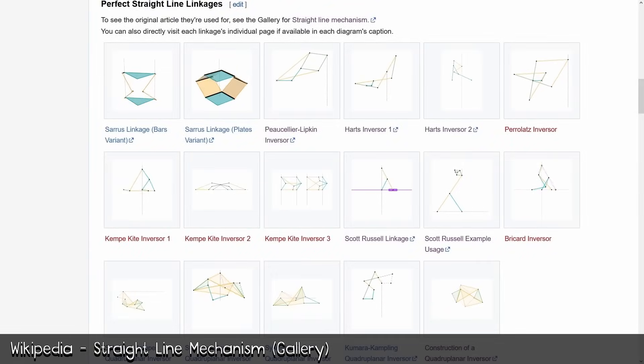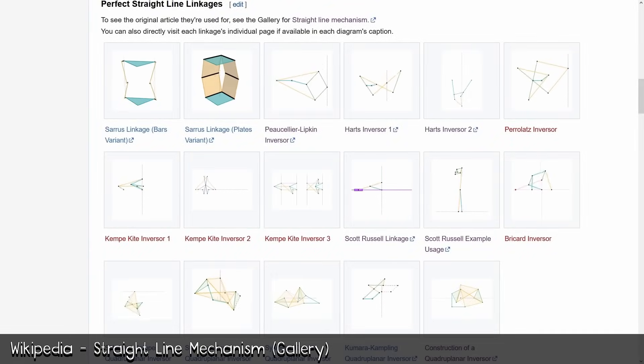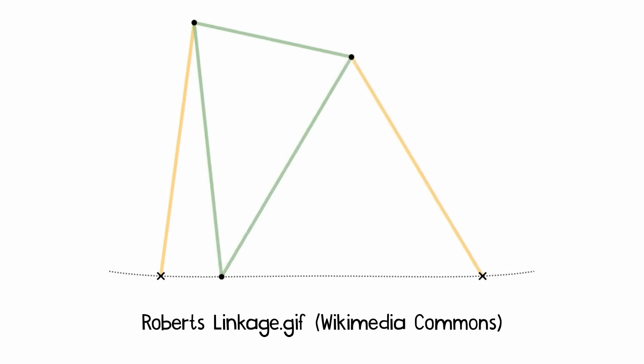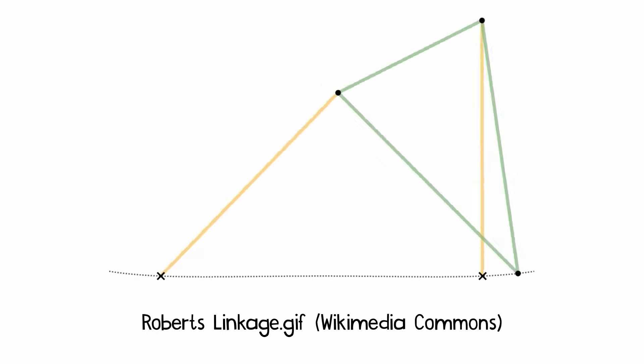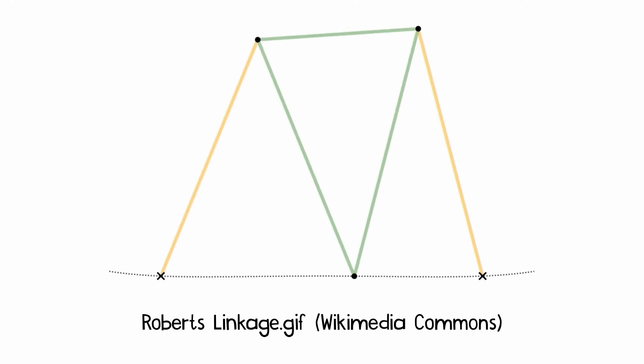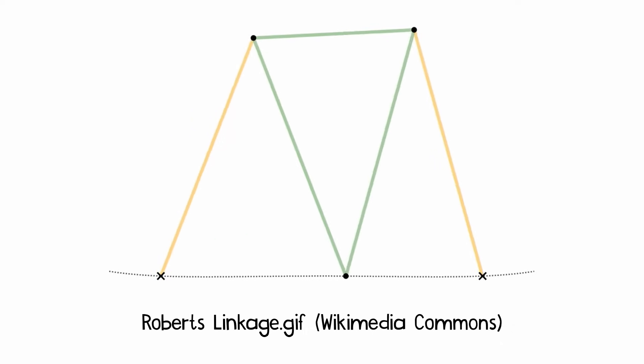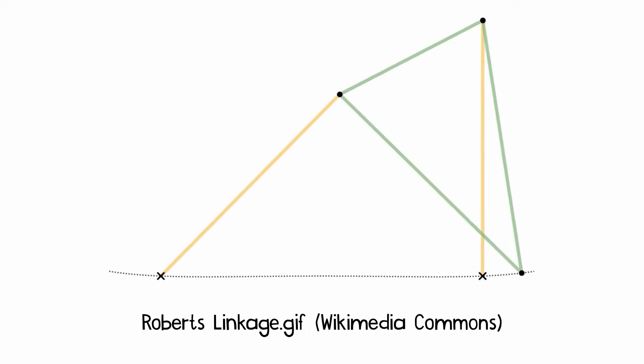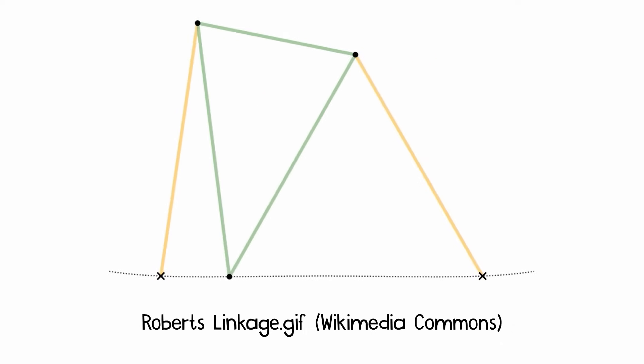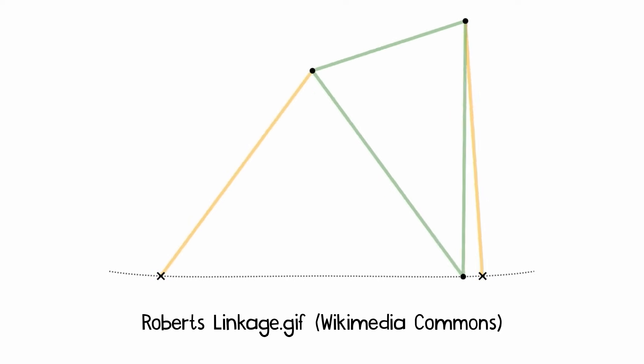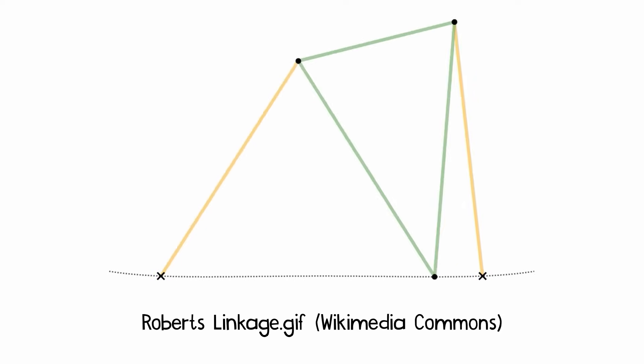As I looked through the list, it became evident that this criteria eliminated every other straight-line linkage except for the Roberts linkage. The Roberts linkage achieves a straight-line motion by utilizing a triangular or T-shaped connecting bar positioned atop two other bars. The connecting bar rotates roughly in the opposite direction of the bars it rests upon, resulting in an approximation of straight-line motion.